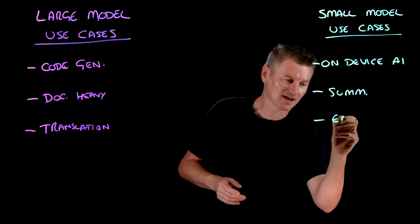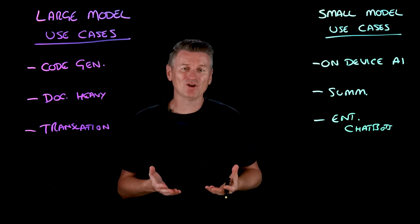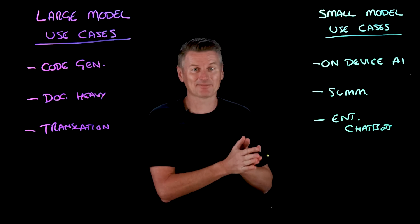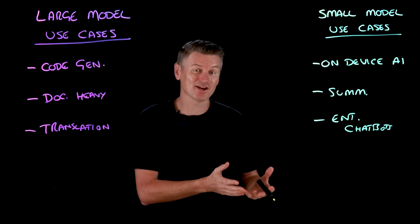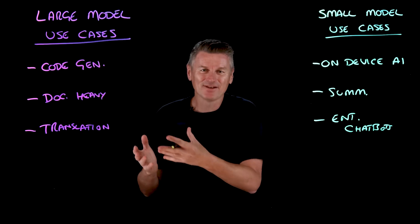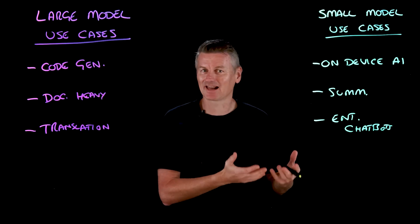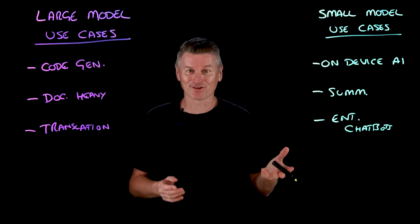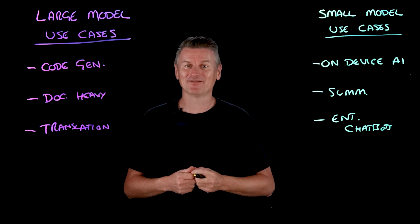Enterprise chatbots are another strong use case for small models. A business can fine-tune a 7 or 13 billion parameter model on its own manuals, reaching near-expert accuracy. IBM found that the Granite 13B family matched the performance of models five times larger on typical enterprise Q&A tasks. The rule of thumb: for expansive, open-ended reasoning, bigger still buys more headroom; but for focused skills like summarizing and classifying, a carefully trained small model delivers perhaps 90% of the quality at a fraction of the cost. In the end, it's your use case that drives the decision.